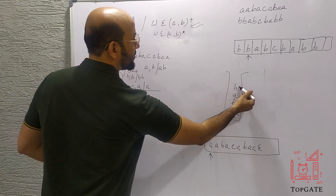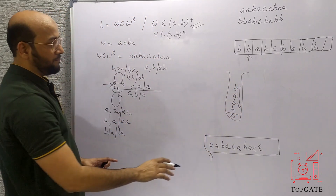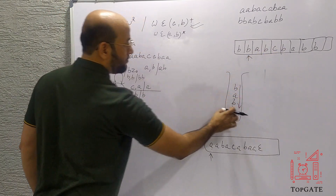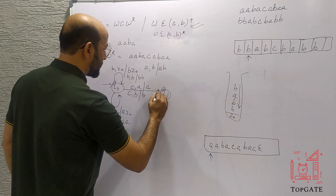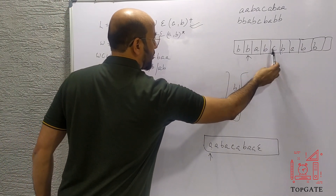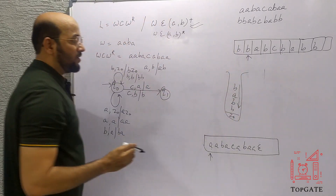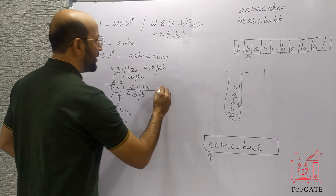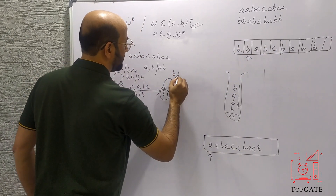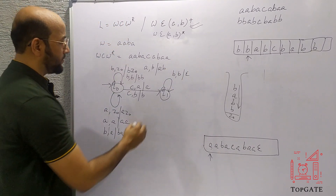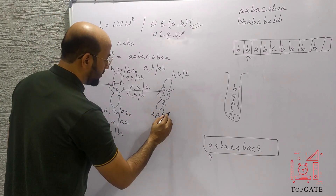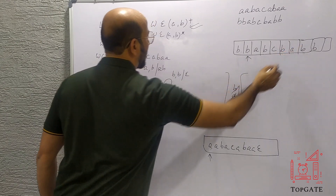After C we move to a new state Q1. At Q1 we pop elements that match. We take a self-loop: element to process is B with B on top of stack — pop it. Element to process is A with A on top — pop it. We pop only when the input matches the top of stack. So all elements after C are popped against the corresponding stack contents.